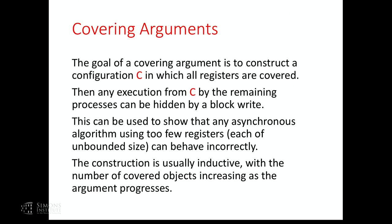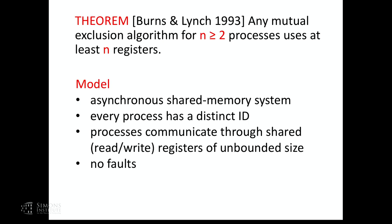We start with nothing being covered, then show that one will be covered, then get a configuration with two covered, and so on until we have everything covered. To illustrate this technique, I'll present the following result due to Burns and Lynch: any mutual exclusion algorithm for two or more processes uses at least N registers. Covering arguments were first introduced in this particular lower bound.